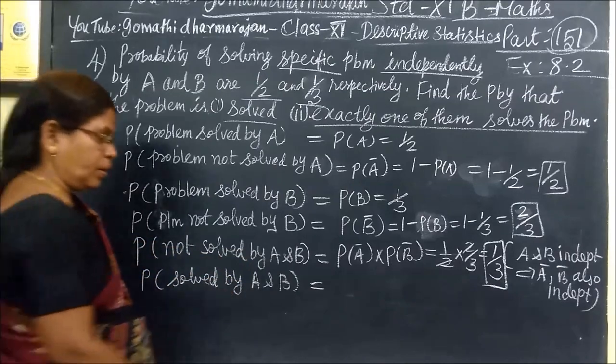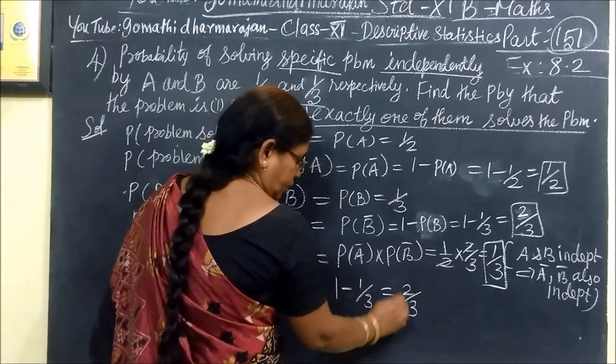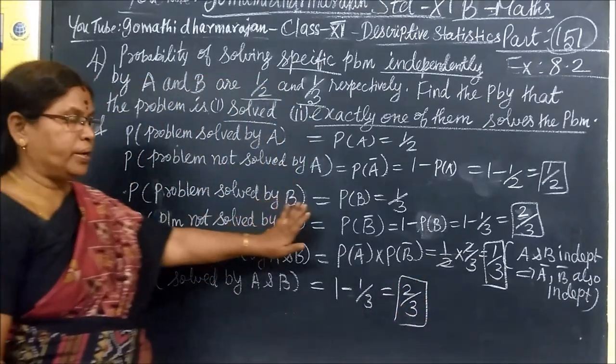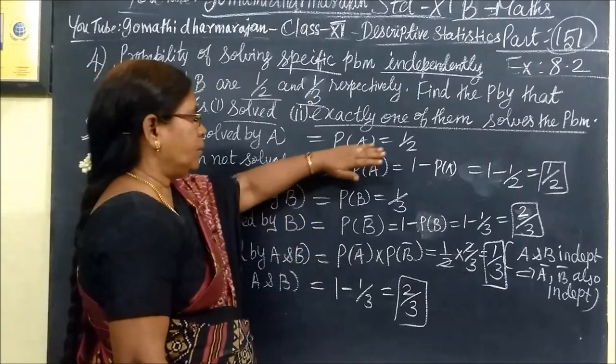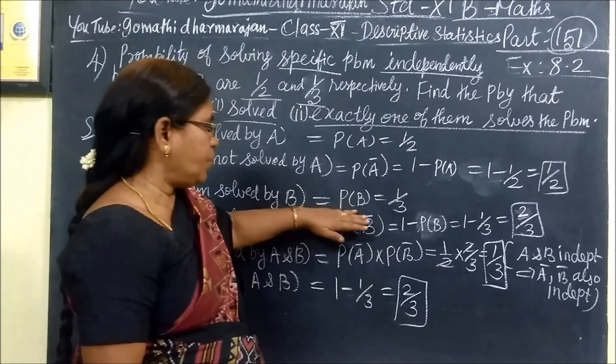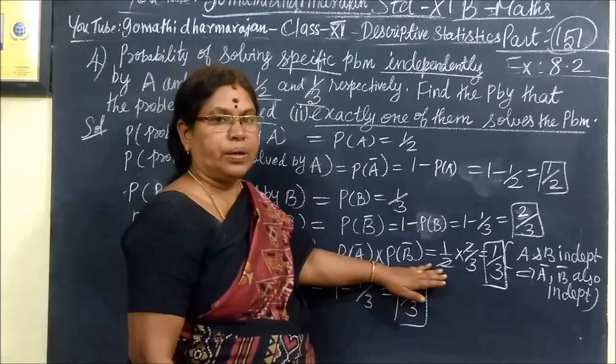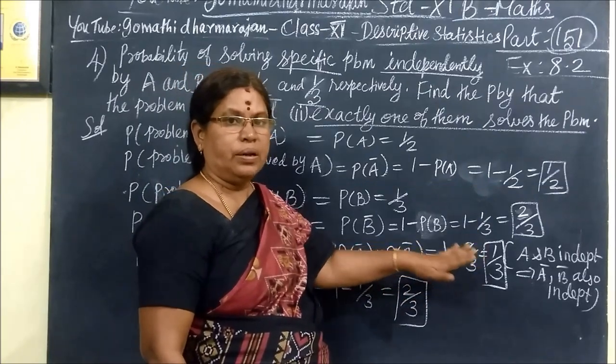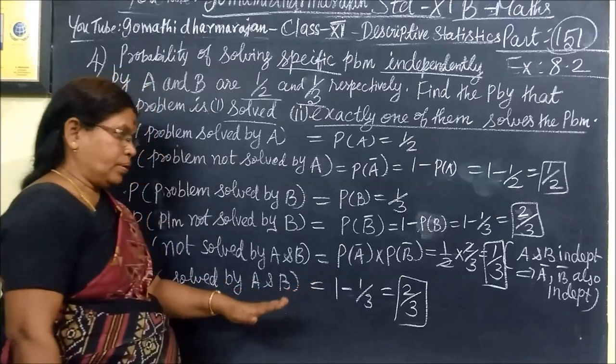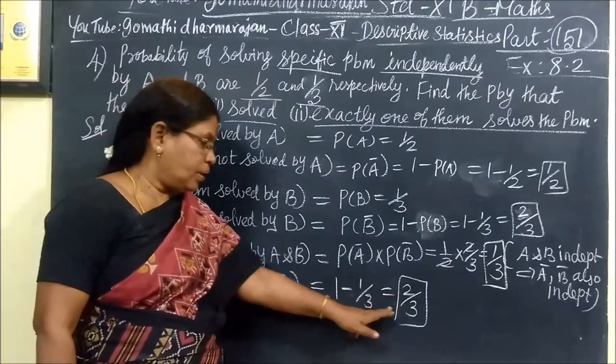Solved by one. So 1 minus 1/3 equal to 2/3. P of A bar is P of A bar, P of B equal to P of B bar, 1/2. Because A bar and B bar are independent, multiply 1/3. So 1 minus 1/3 equals 2/3.